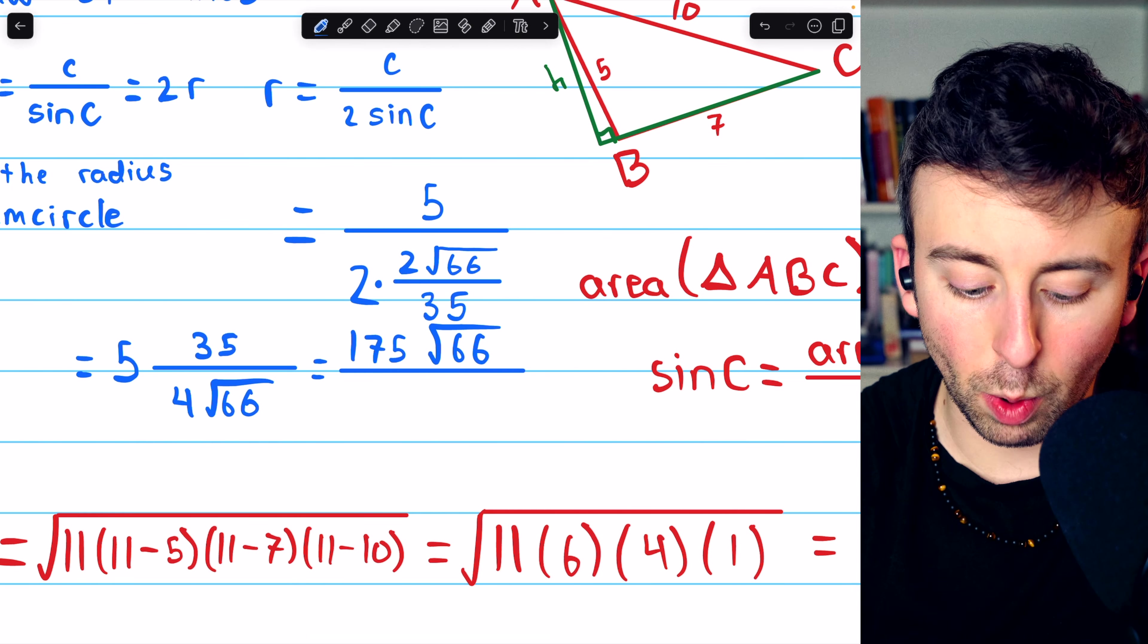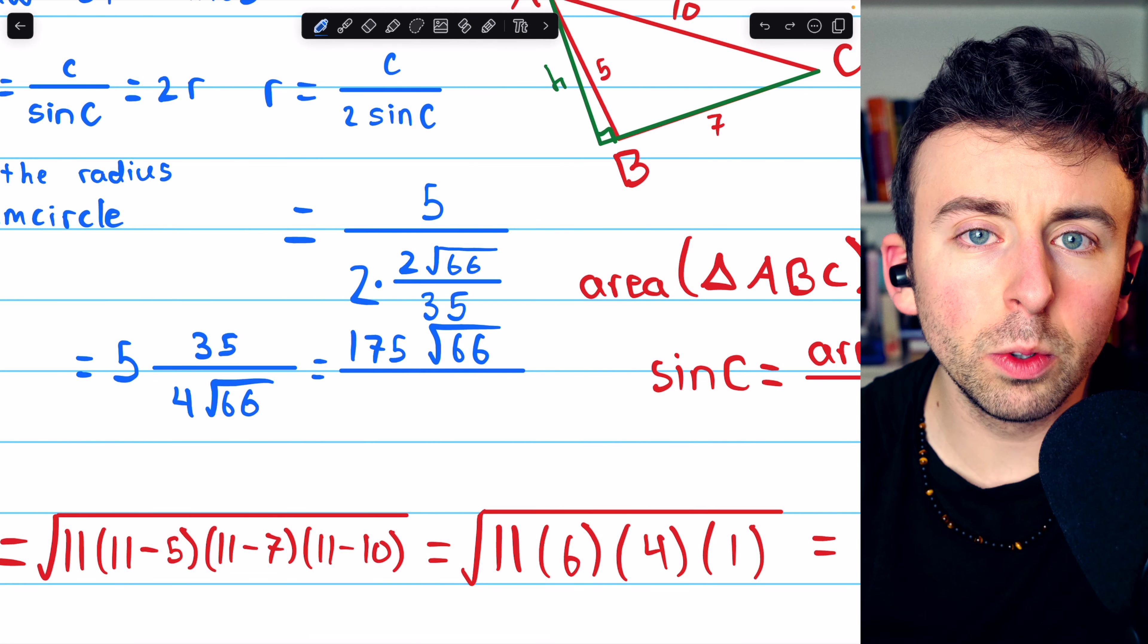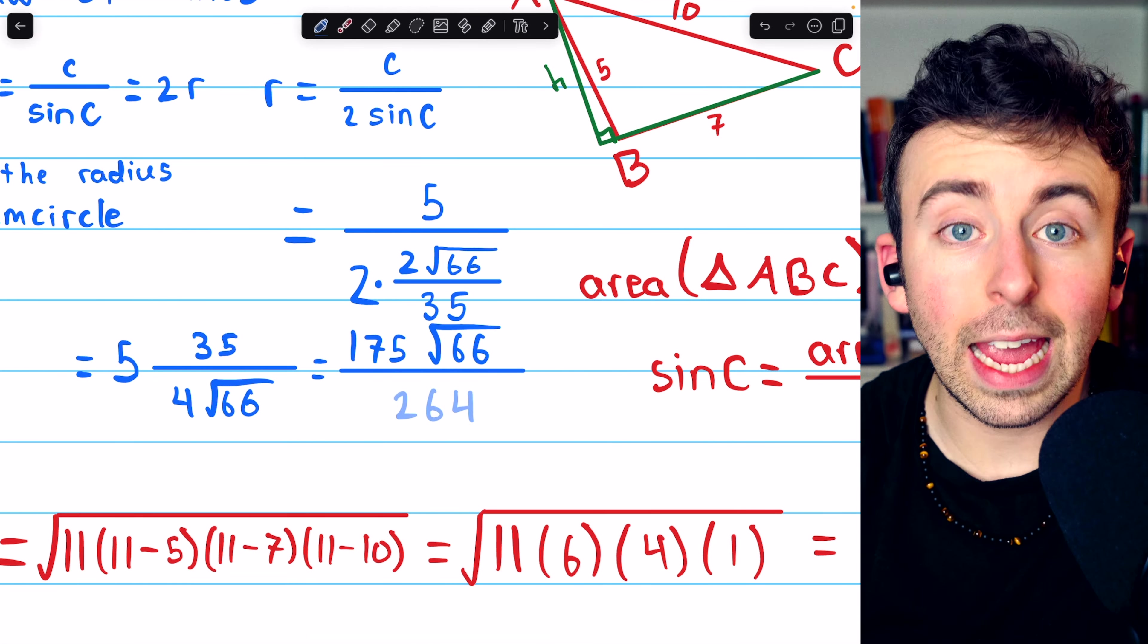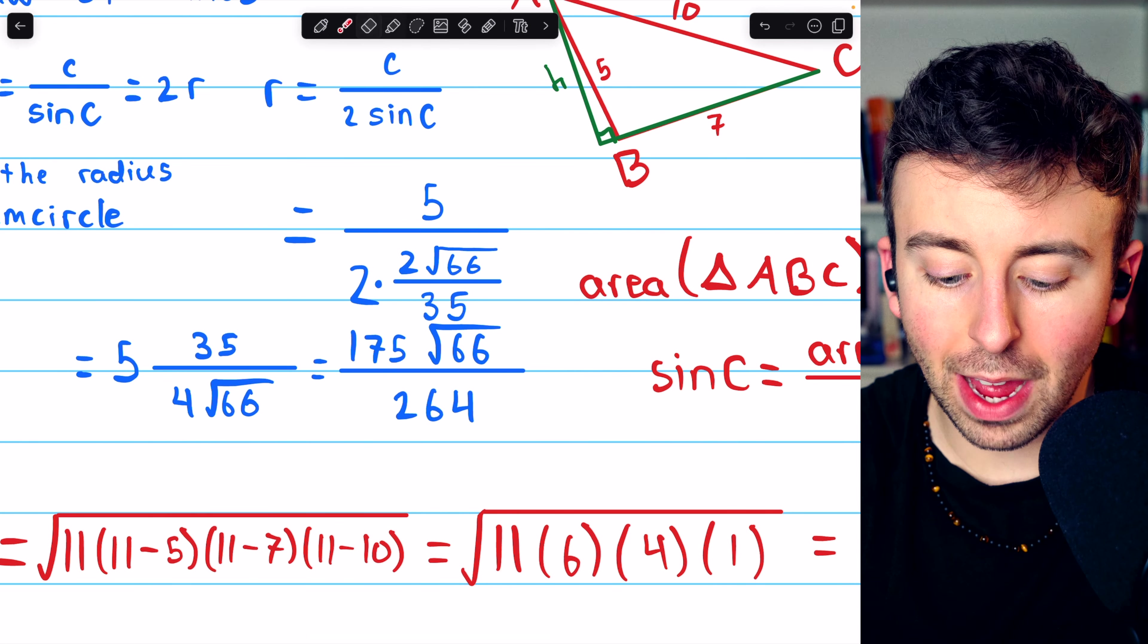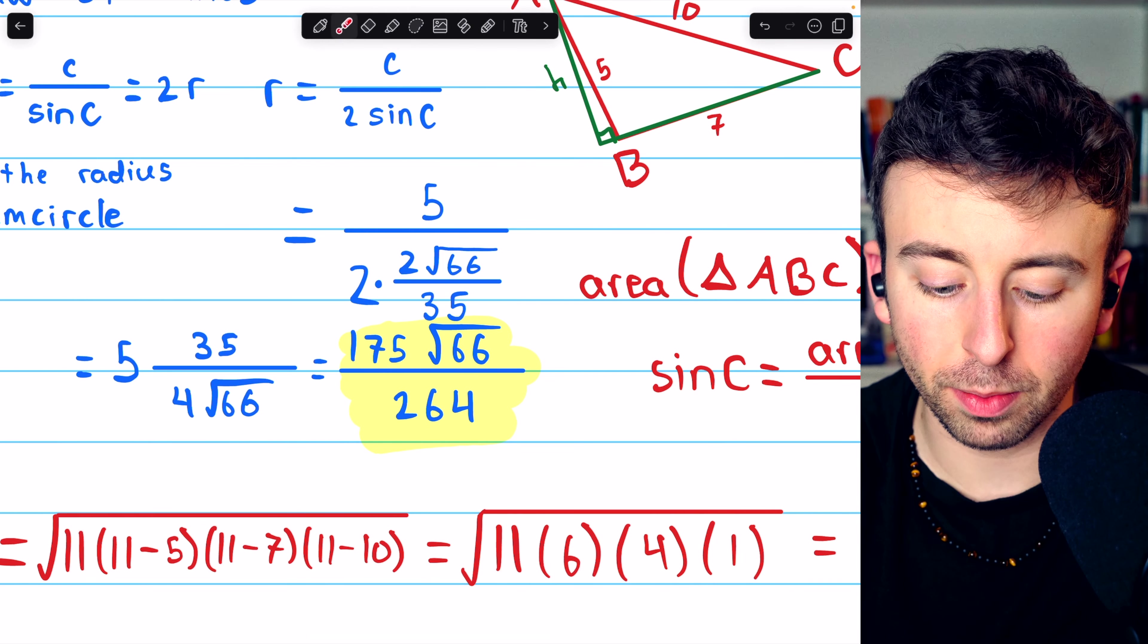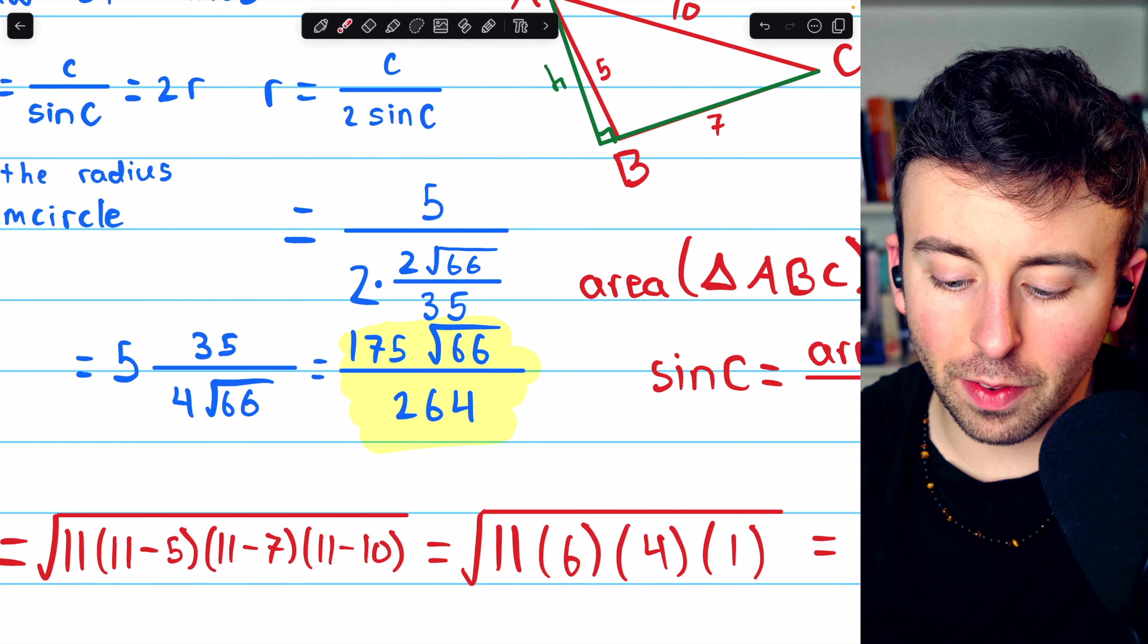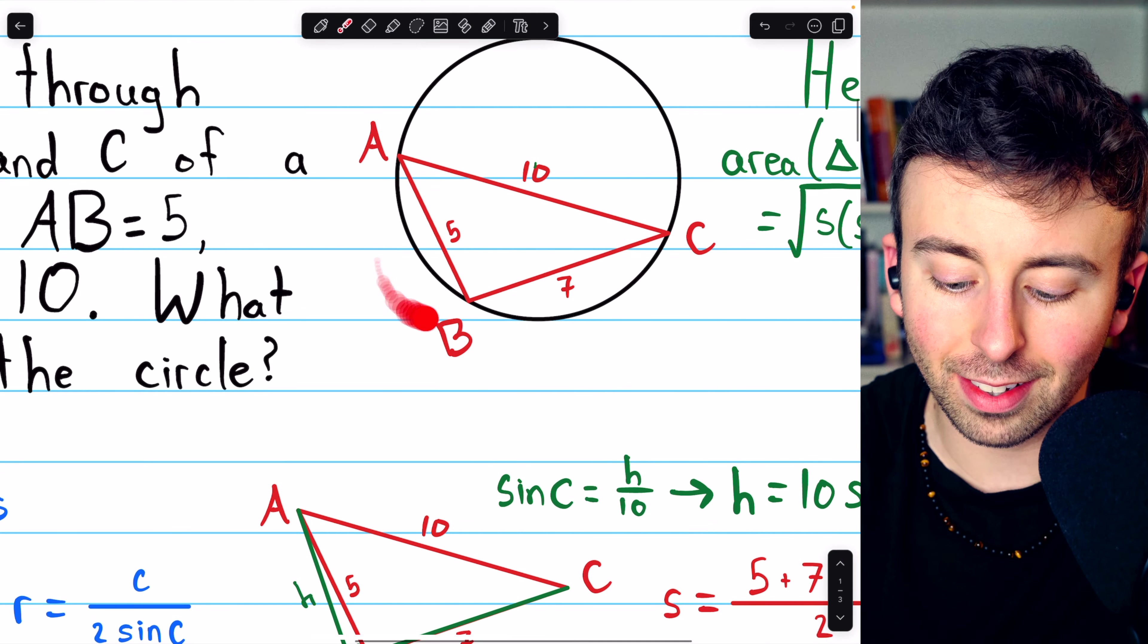And then in the denominator, the square root will be canceled out. So we'll just have 66 times 4, which is 264. And these guys have no common factors. So that is our final answer for r, the radius of the circumcircle: 175 root 66 divided by 264.